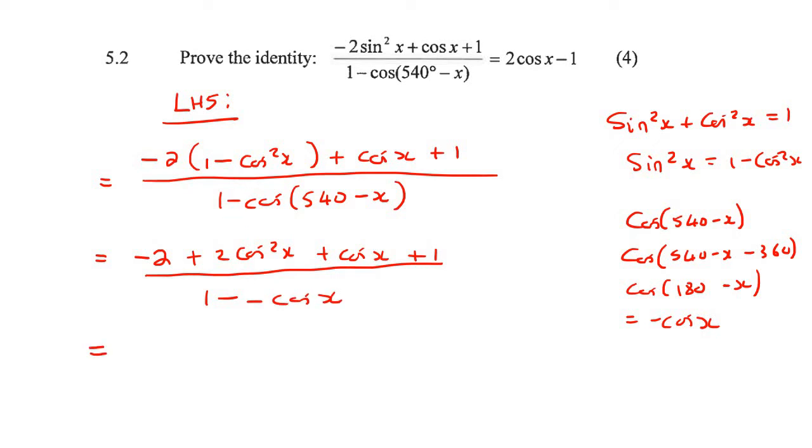Now simplifying at the top, we get 2cos²x + cos x - 1, since -2 + 1 = -1. At the bottom, we have 1 + cos x.